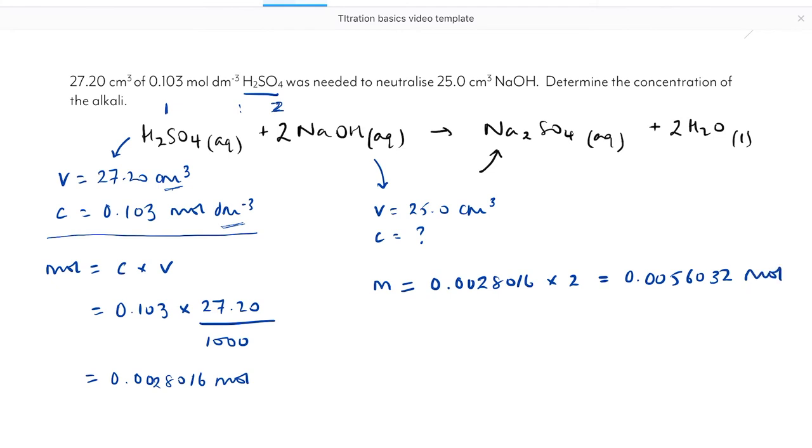I can now work out the concentration. The concentration equals moles divided by volume. I know the number of moles of alkali used: 0.0056032. The volume is 25 cm³. Once again, I need to divide that by 1000 to turn it into dm³. When I put that into my calculator, it comes out as 0.224 mol dm⁻³.